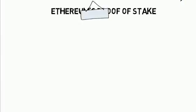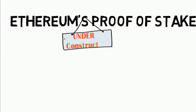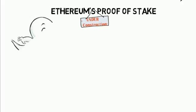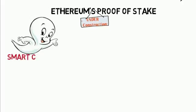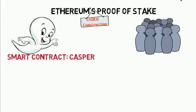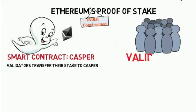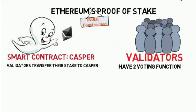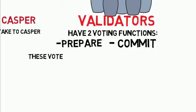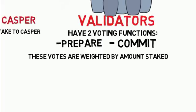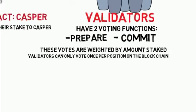So, in 2014, Vitalik and Vlad began working on Proof-of-Stake, and we shall see the first of Proof-of-Stake with Casper — a smart contract that allows users with about 1,000 Ether, or in a to-be-developed validator pool, to transfer their stake to Casper. These users will then become validators that will have two functions: prepare and commit. These votes are weighed by the amount of Ether staked, and all validators can only vote once per position on the blockchain.